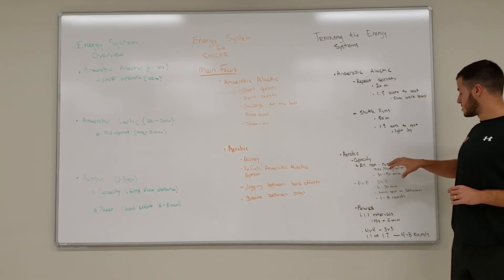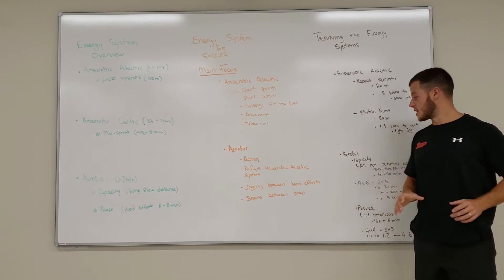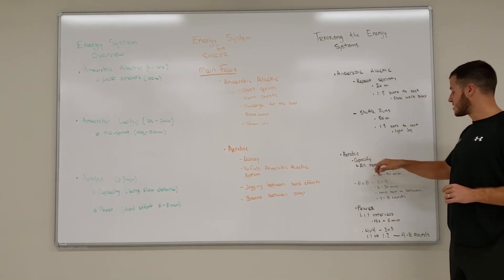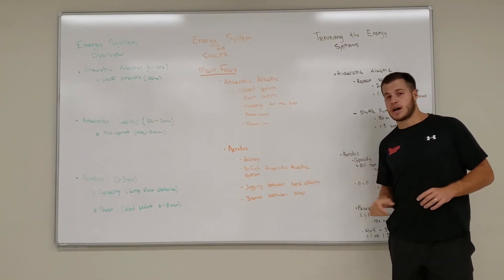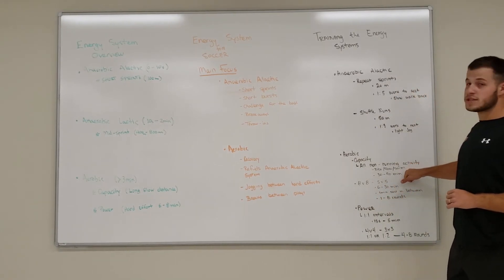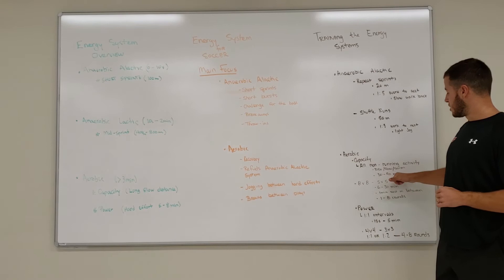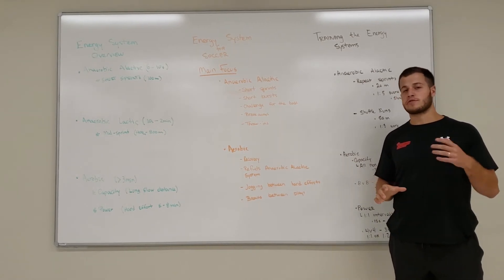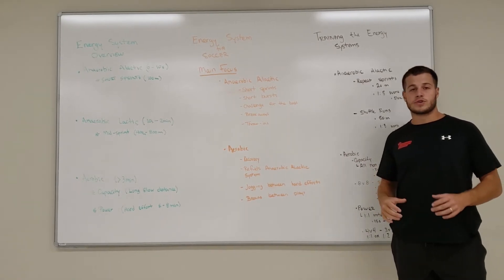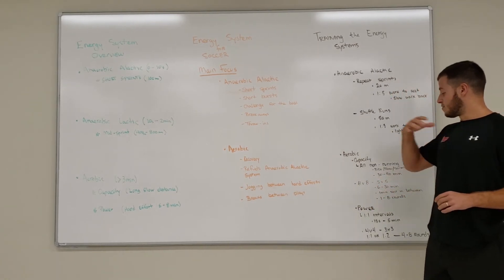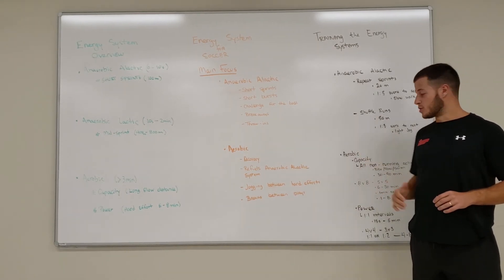For aerobic capacity, we have conditioning drills and soccer-specific drills. For general conditioning, non-running activities like biking, rowing, and swimming work well, anywhere from 30 to 90 minutes. If you're not comfortable going long yet, start at 30 minutes — you can rotate 10 minutes on each machine to avoid overtraining the same movement patterns. As you get fitter, just add more time, and if you enjoy one activity more, push that one further.